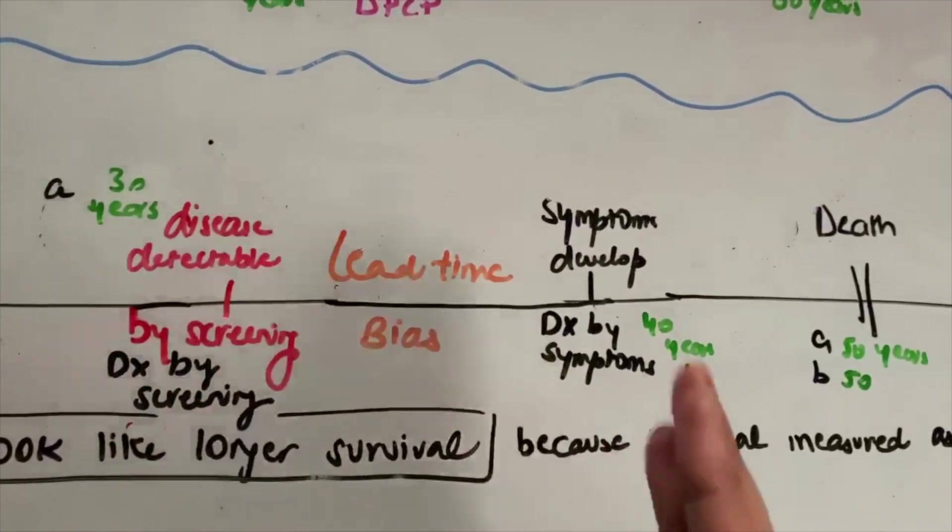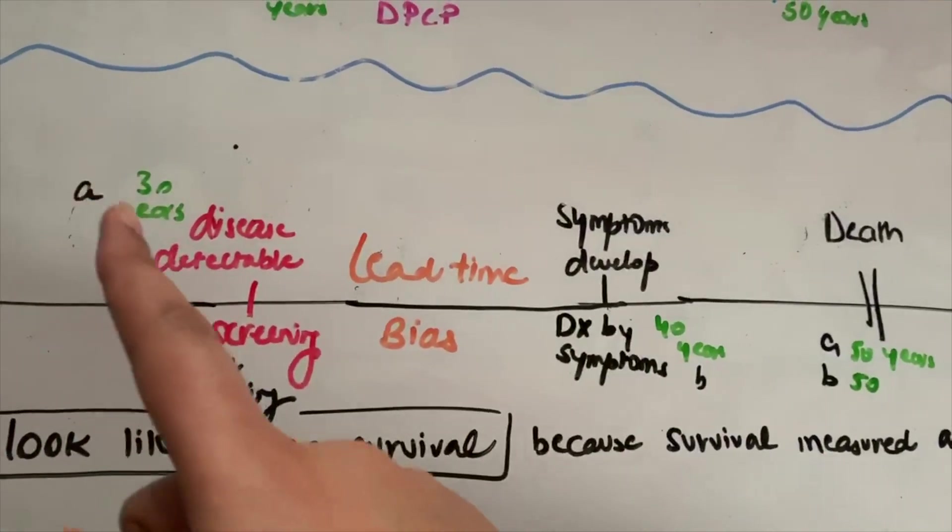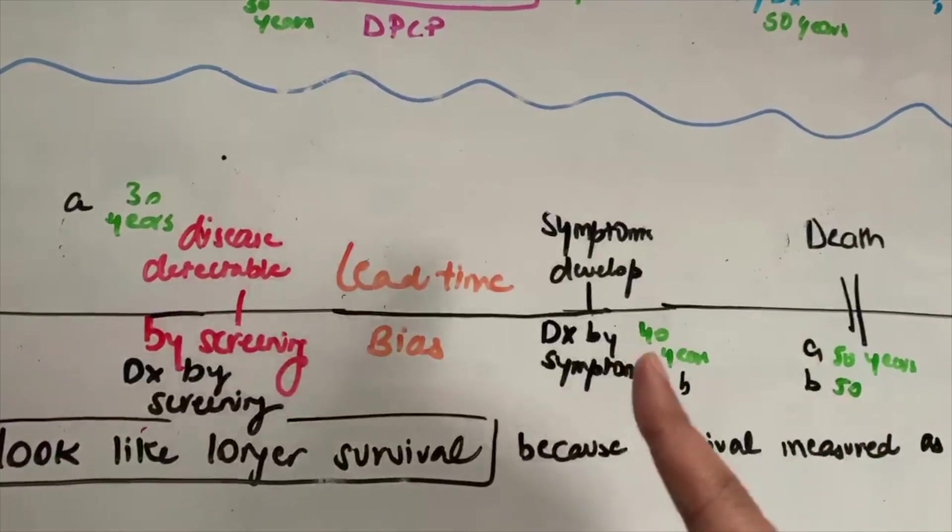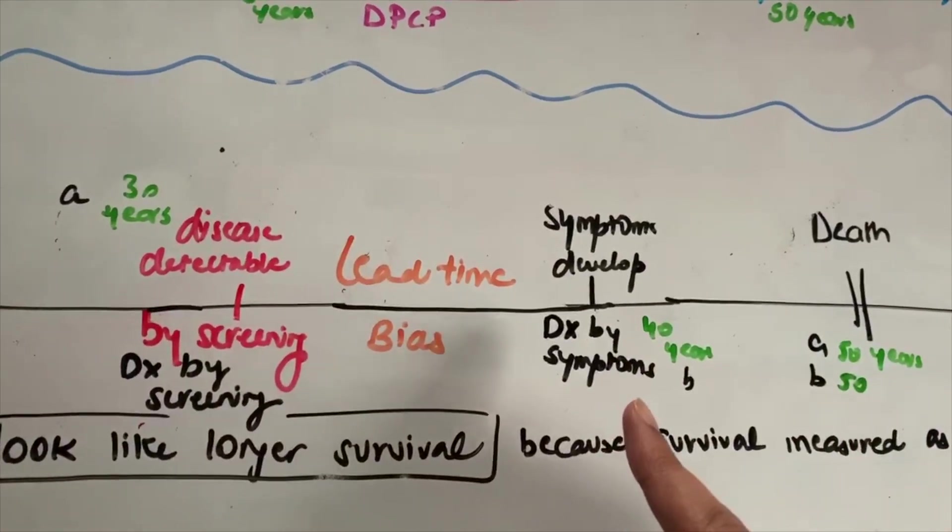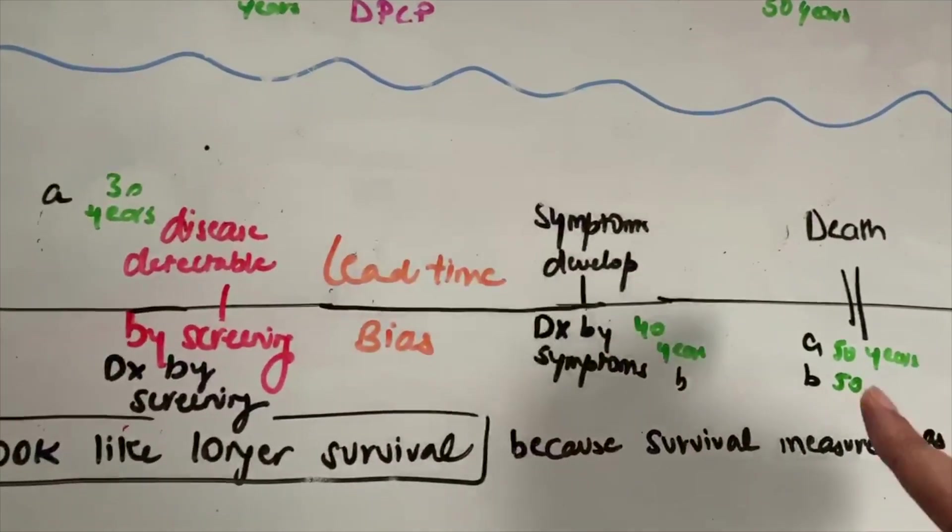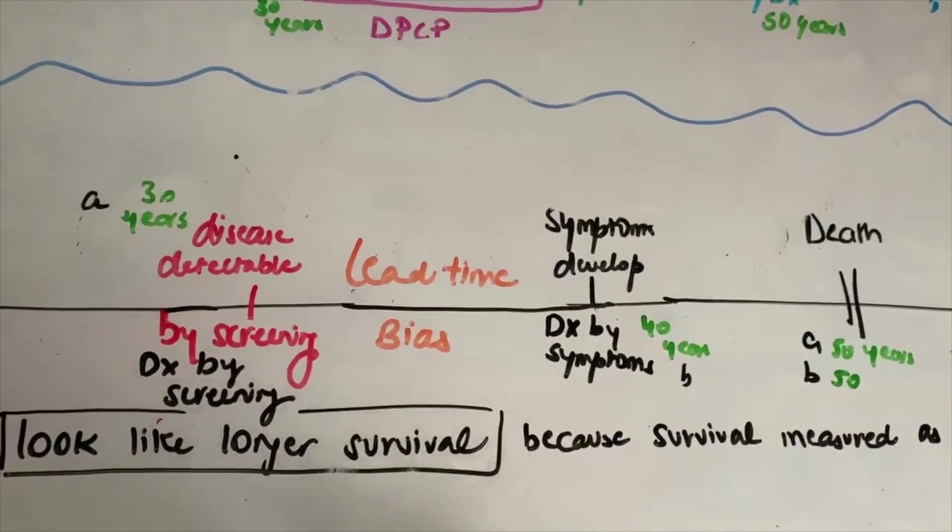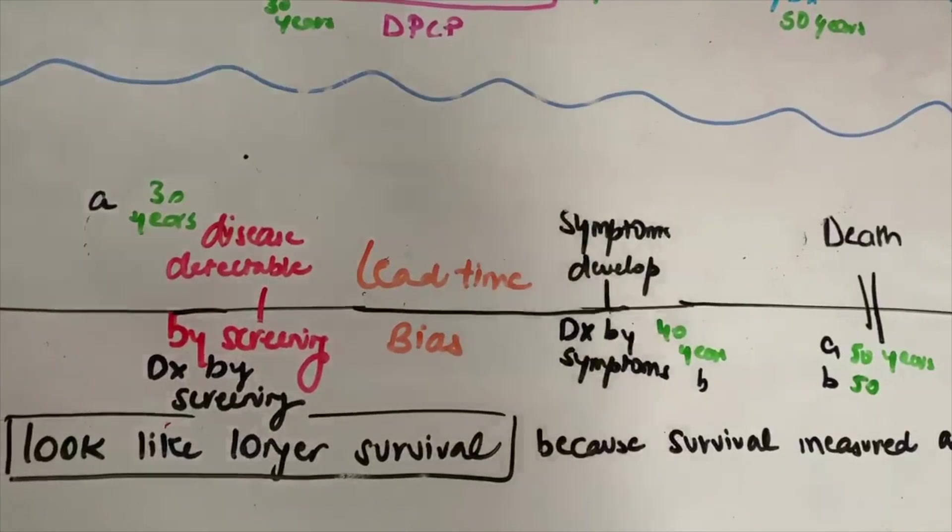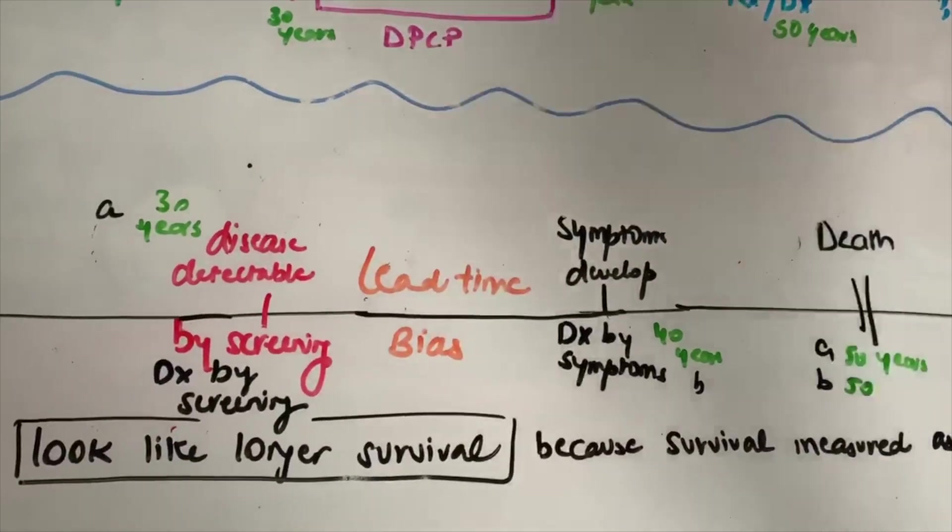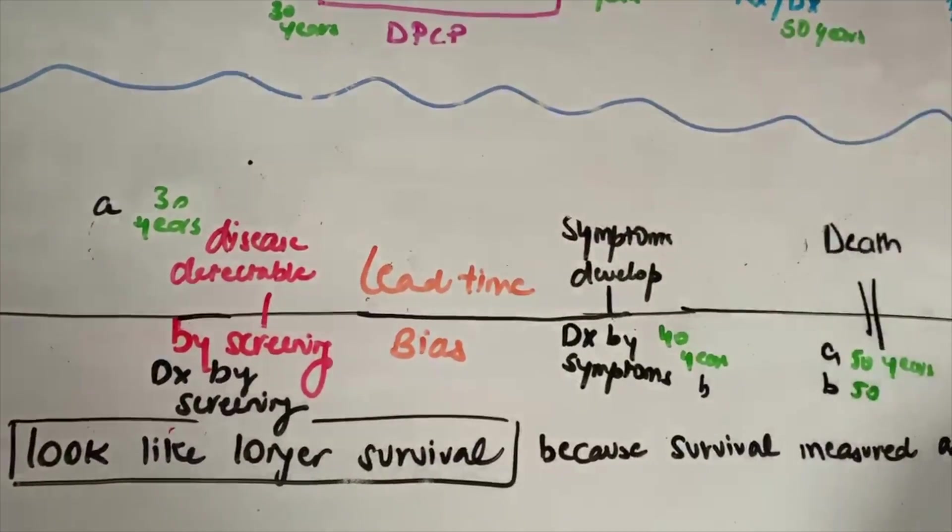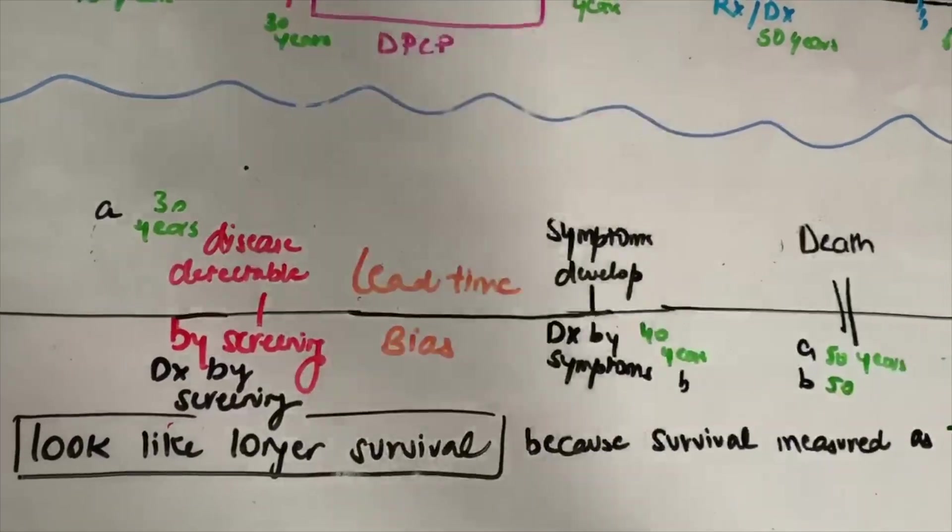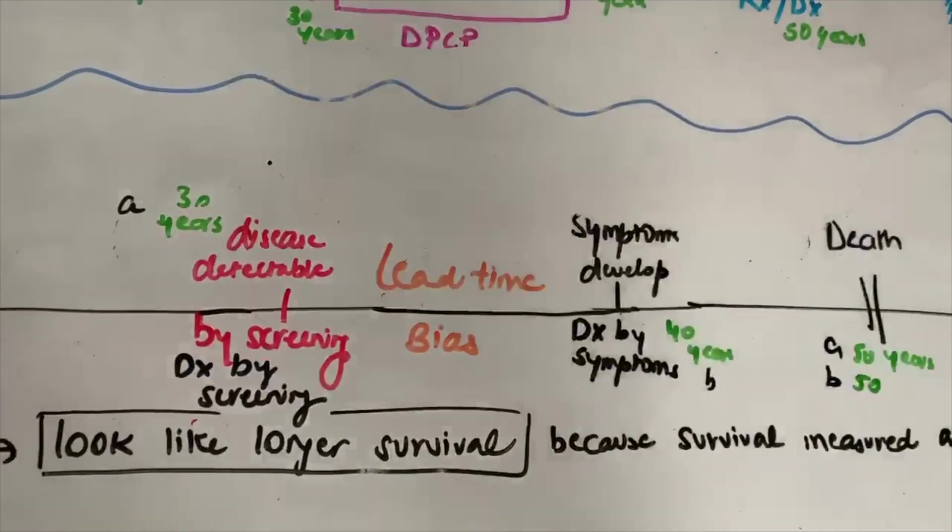So both of them got diagnosed—one got diagnosed through screening test at 30, the other one got diagnosed through symptoms at the age of 40, both died at 50. Now, lead time bias occurs because survival generally is measured from the time of diagnosis to the time of death, right? Time of diagnosis to time of death.